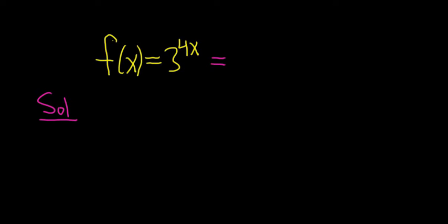We can write this as 3 to the fourth to the x. What you do here is you multiply these exponents. 4 times x is simply 4x.